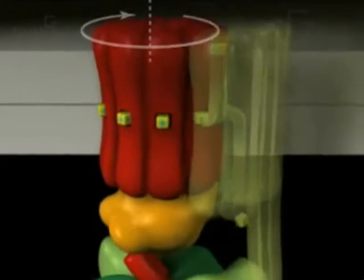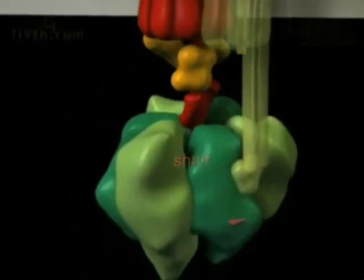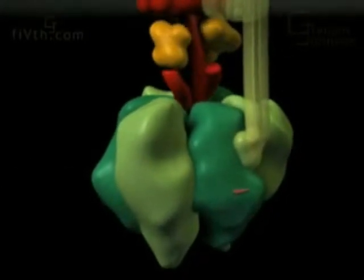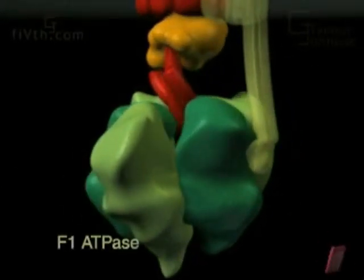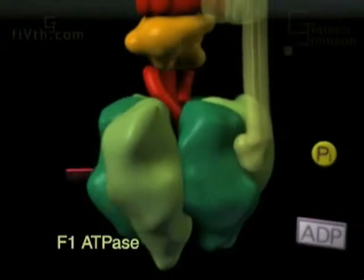The rotational energy is transmitted via a shaft attached to the rotor that penetrates deep into the center of the characteristic lollipop head, the F1 ATPase, which catalyzes the formation of ATP.